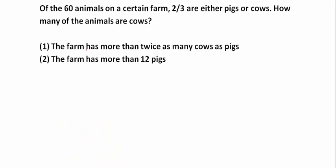Of the 60 animals on a certain farm, two-thirds are either pigs or cows. How many of the animals are cows? So let's see the first sentence. Of the 60 animals on a certain farm, two-thirds are either pigs or cows. So pigs, I'm gonna call it P and cows C.